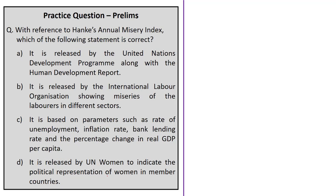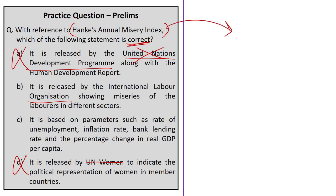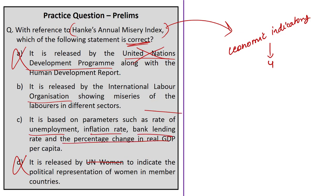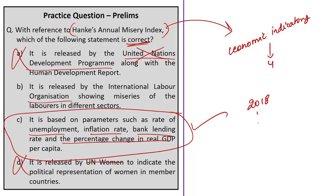The next question is based on Hanke's Annual Misery Index. We must choose the correct statement. The first statement says it is released by the United Nations Development Programme along with the Human Development Report — this is not a UN-developed index, so we can eliminate options A and D. The second option says it is released by the International Labour Organization showing miseries of laborers in different sectors — this is also wrong. Hanke's Annual Misery Index is an economic indicator based on four components: rate of unemployment, inflation rate, bank lending rate, and GDP per capita. The correct answer is option C, which mentions all four parameters, and according to the 2018 index India was ranked at 44th position, with the major issue being higher lending rates.